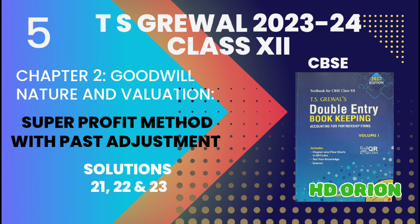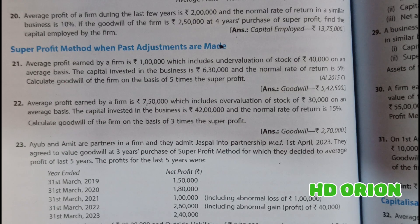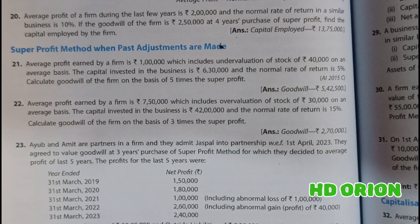Hello everyone, welcome to my channel HDO Ryan. We are studying accountancy for Class 12 from T.S. Grewal's textbook 2023 edition — Accounting for Partnership Firms, Chapter 2: Goodwill Nature and Valuation. In this video we will study calculation of goodwill by super profit method when past adjustments are made. Let us see Question Number 21.